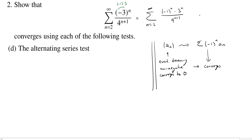And so from here, you can see our a sub n sequence, okay, ignore the alternator, it would be 3 to the n over 4 to the n plus 1. Alright, so in order to use the alternating series test, we need to verify that the sequence we've been given satisfies these three hypotheses.